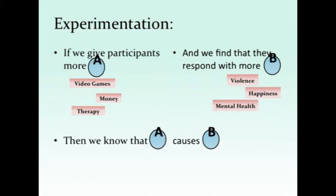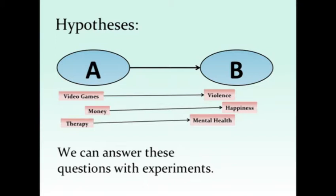So if we give participants more A and find that they respond with more B, then we know that A actually causes B. In the terms we discussed before: if we give participants more violent video games and they start to become more aggressive, then we know that this is what actually causes the aggression. Or if we give people money and they become happier, we can say that money causes happiness. If we give people therapy and they become better, we can say that therapy makes people better. That's how we answer causal questions by using experimentation.